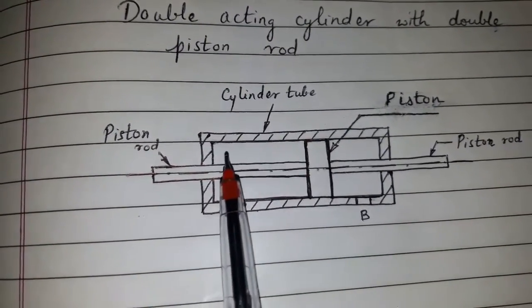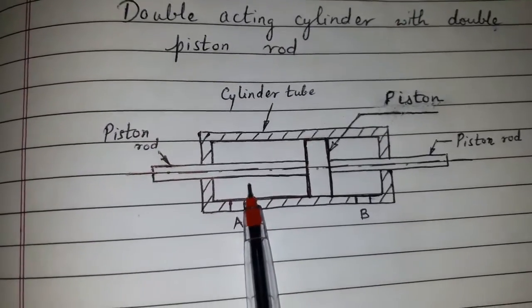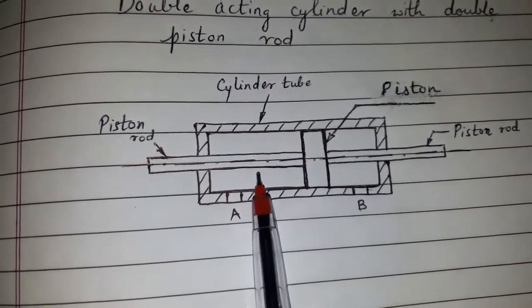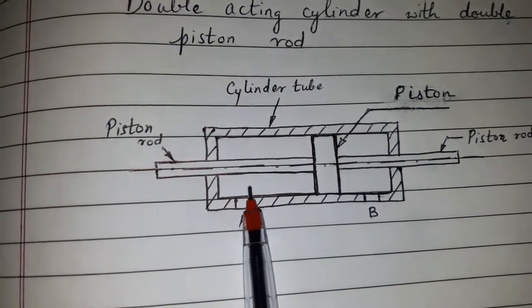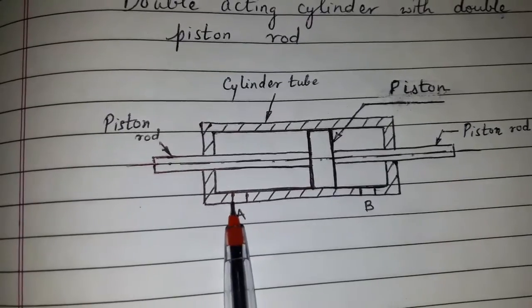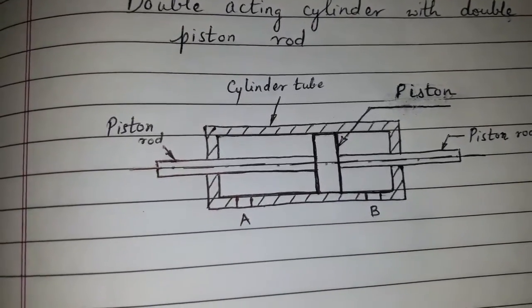the piston moves towards left and the used oil on the left side of the piston from the earlier stroke returns to the oil tank through port A. The cycle repeats in each stroke.